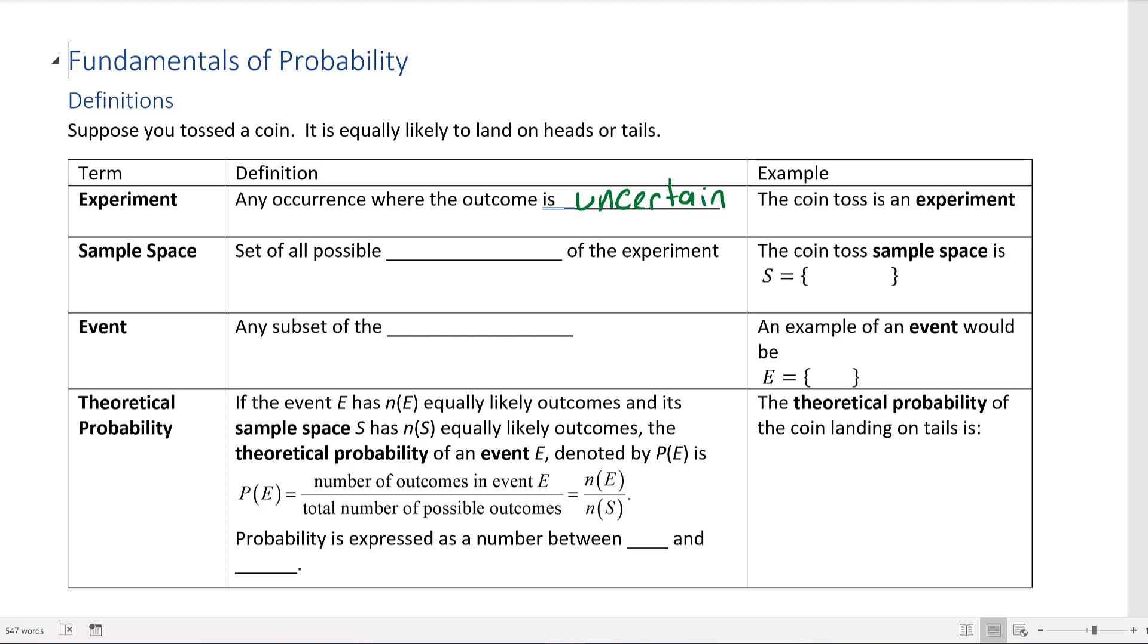Next we have sample space. The sample space is the set of all possible outcomes of the experiment. So in our example about the coin toss, you're either going to get a heads or a tails, so that is our sample space and we're going to use set notation for them.